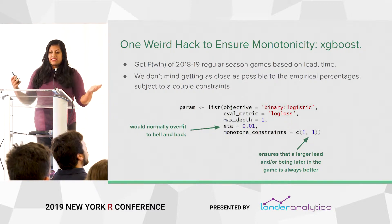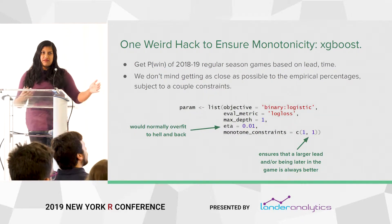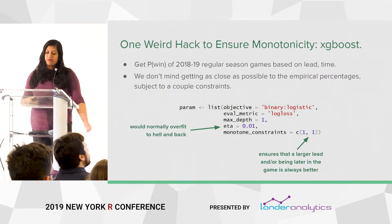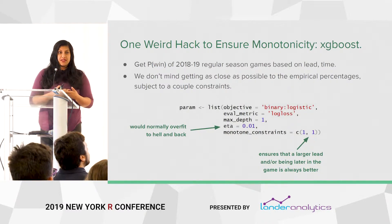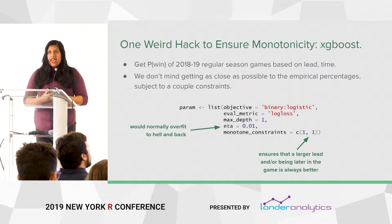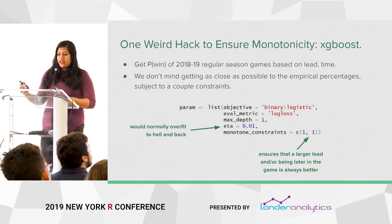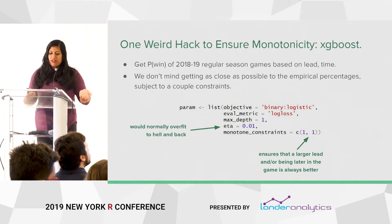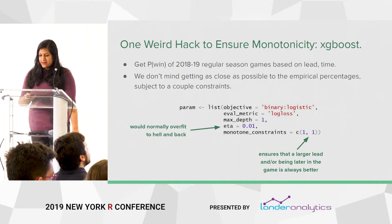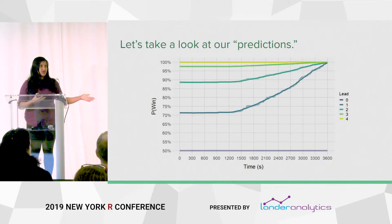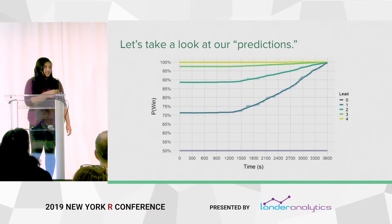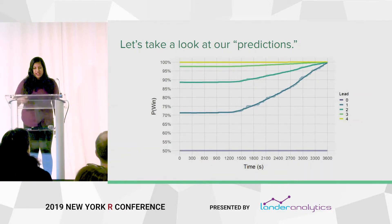Let's start modeling. We want the probability of winning the game based on the lead and the time remaining, and we don't mind getting close to the empirical percentages as long as we have the constraints that a larger lead is always better — more likely to win with a two-goal lead versus one-goal lead — and being later in the game given you have a lead is better because the opponent has less time to make it up. Having a really small learning rate would normally overfit, but with these constraints we don't have to worry as much. After modeling, I honestly think of it more as smoothing — it's still a tree model so it's not super smooth, but we do get that monotonic relationship, which I think is good enough.